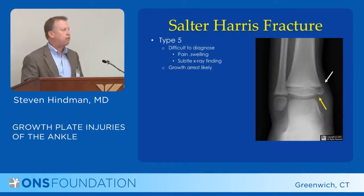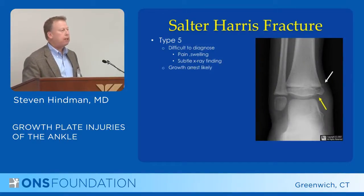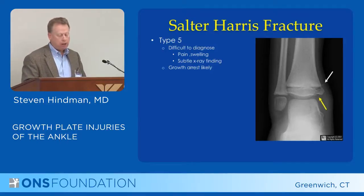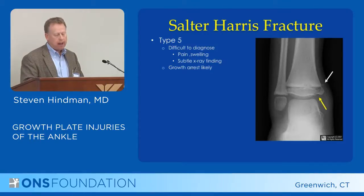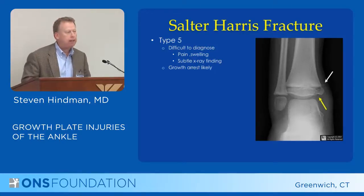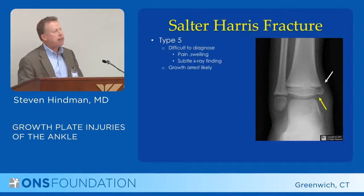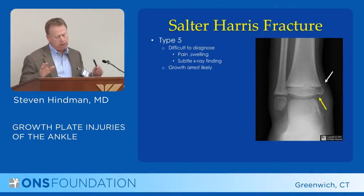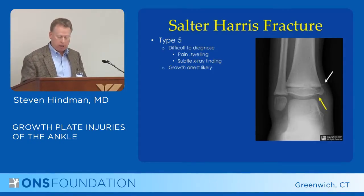Salter-5 is the tough one. These we sometimes don't even realize have occurred — it's a compression injury of the growth plate. You might see a little fleck of bone at the growth plate but not a clear-cut fracture. A compression injury has a very high likelihood of causing growth plate disturbance because you've crushed the growth plate. The problem is you often can't tell for months, and you can get a real surprise when somebody comes back a year later with an angulatory deformity of the ankle because this was missed along the way.